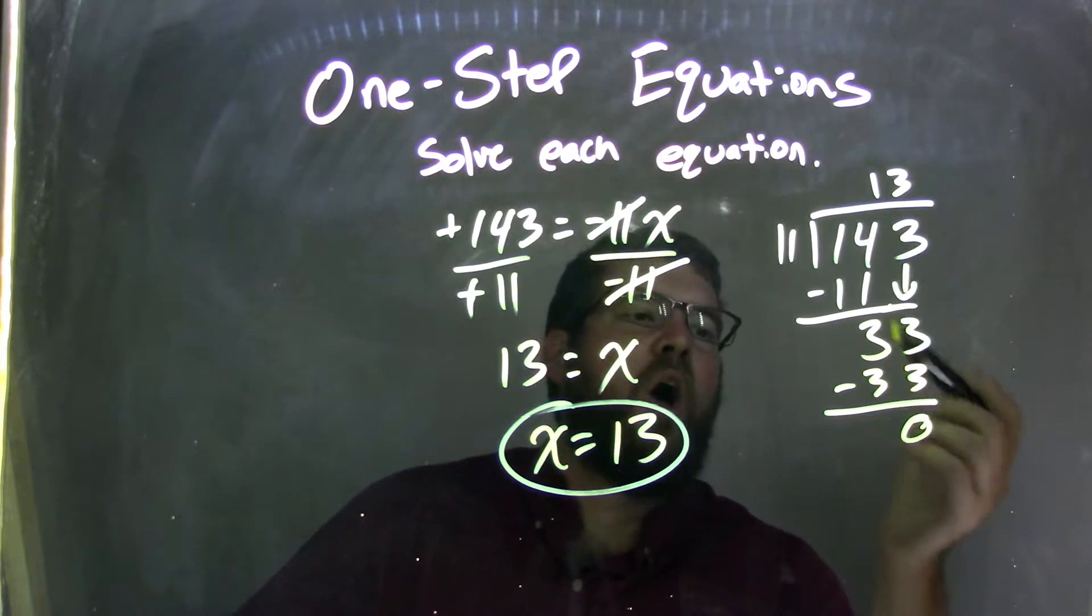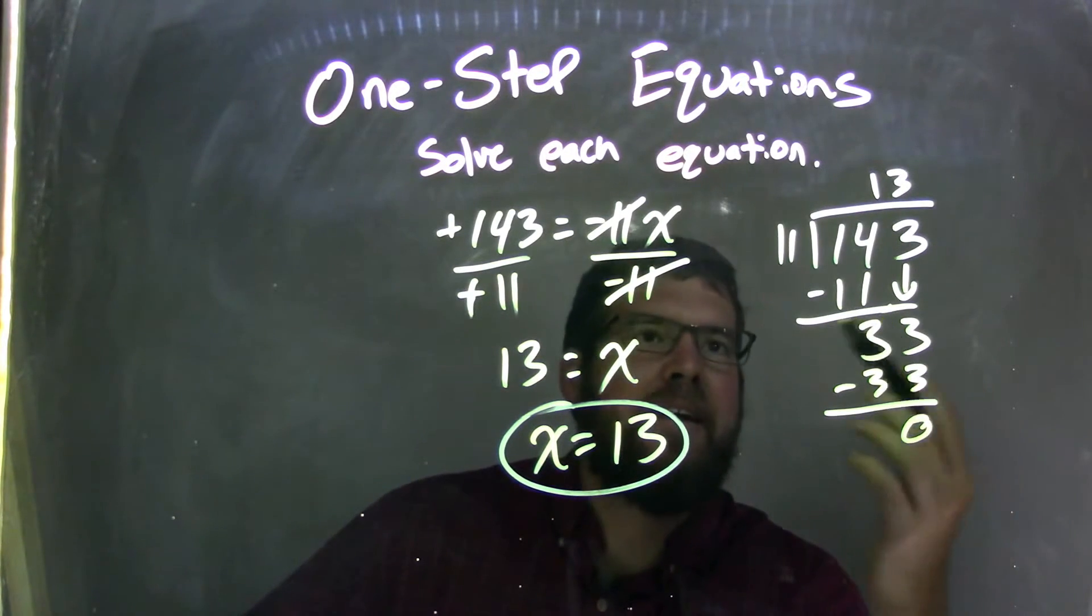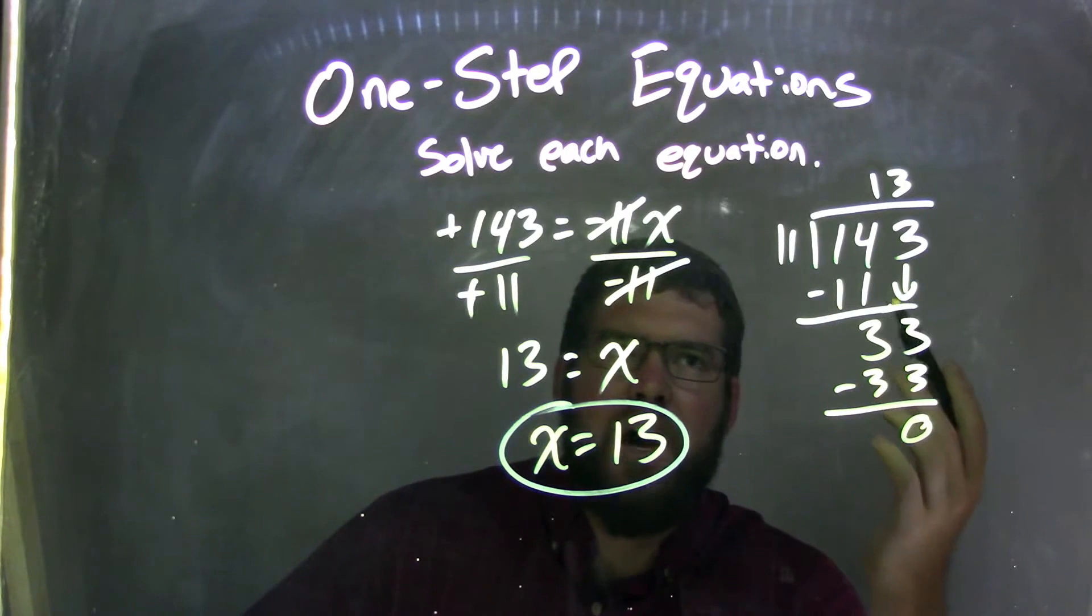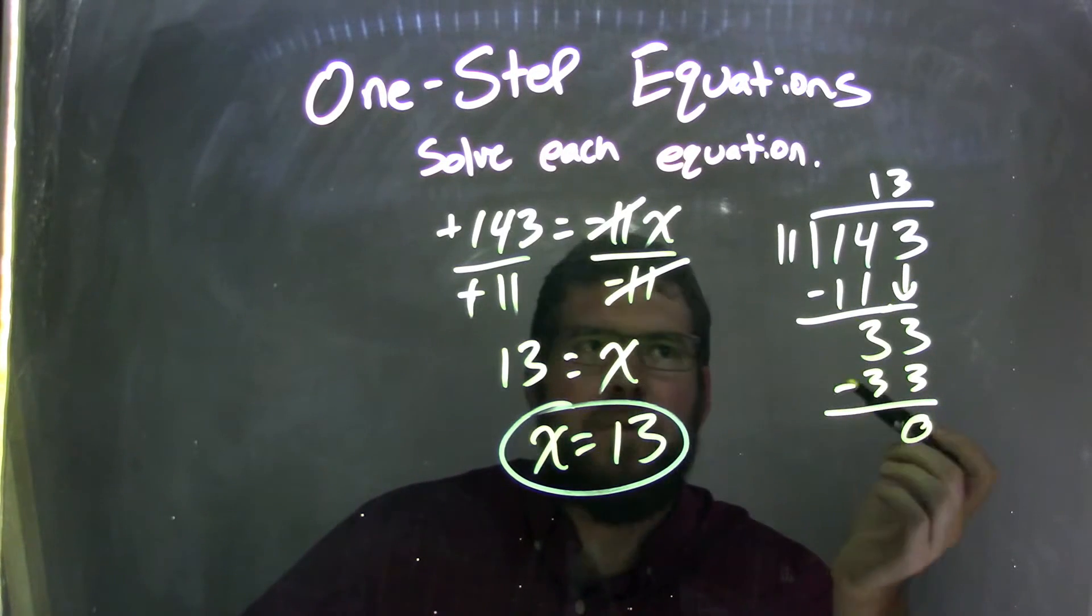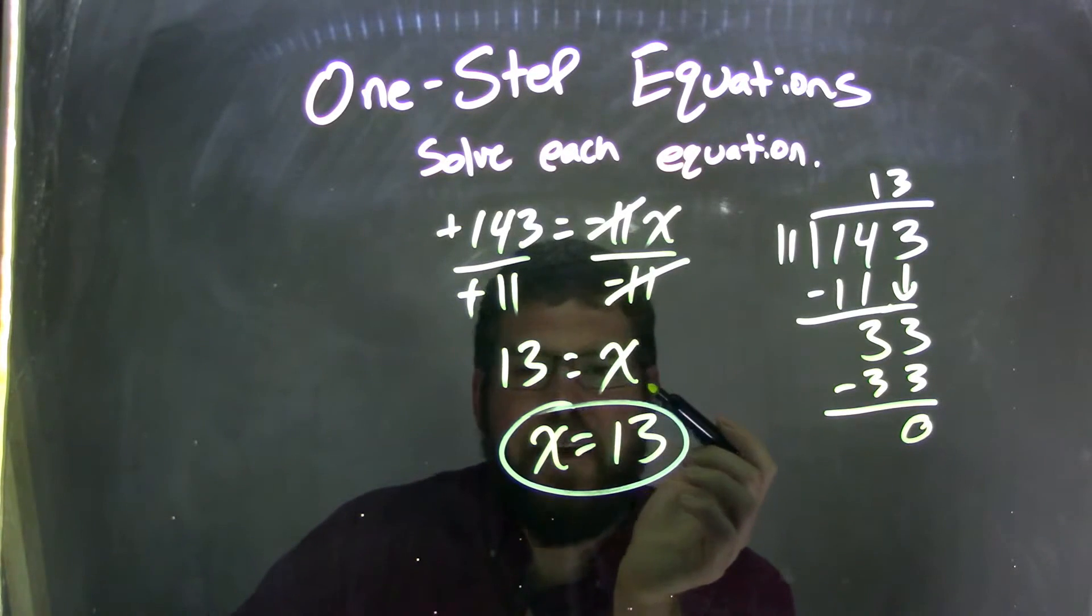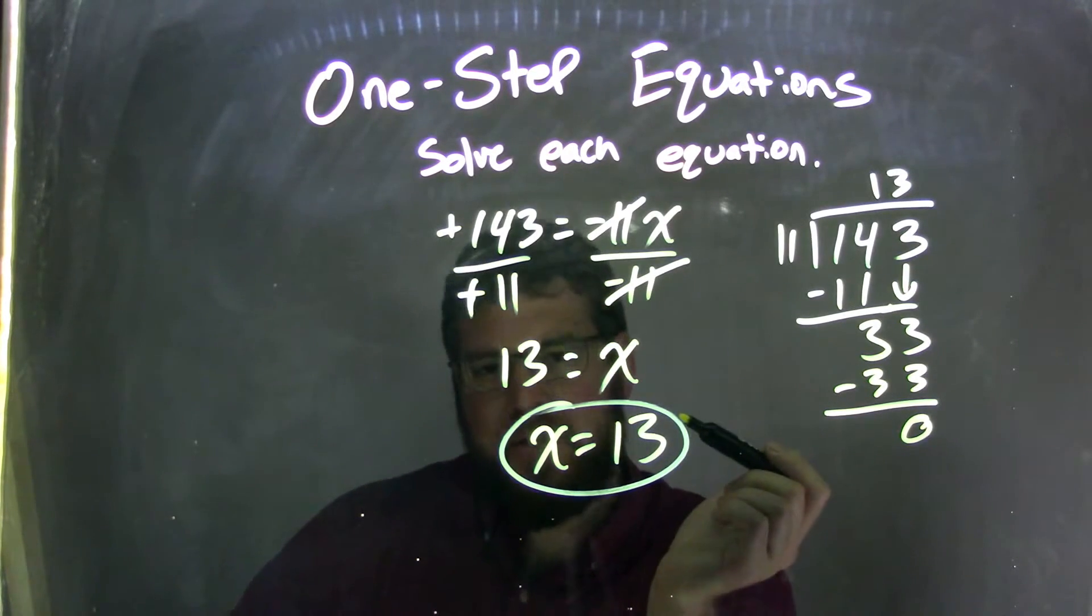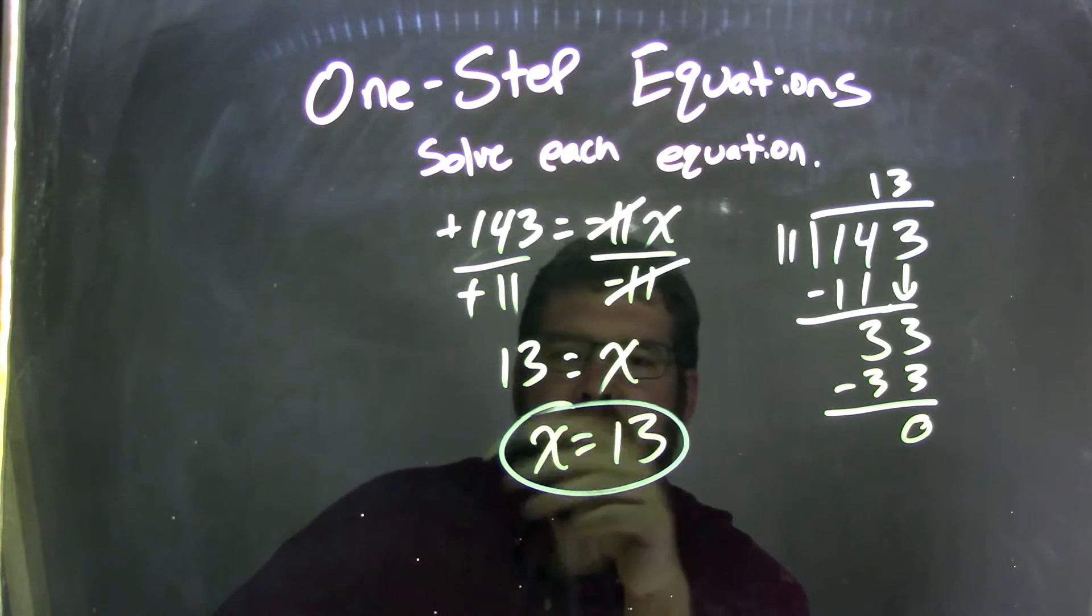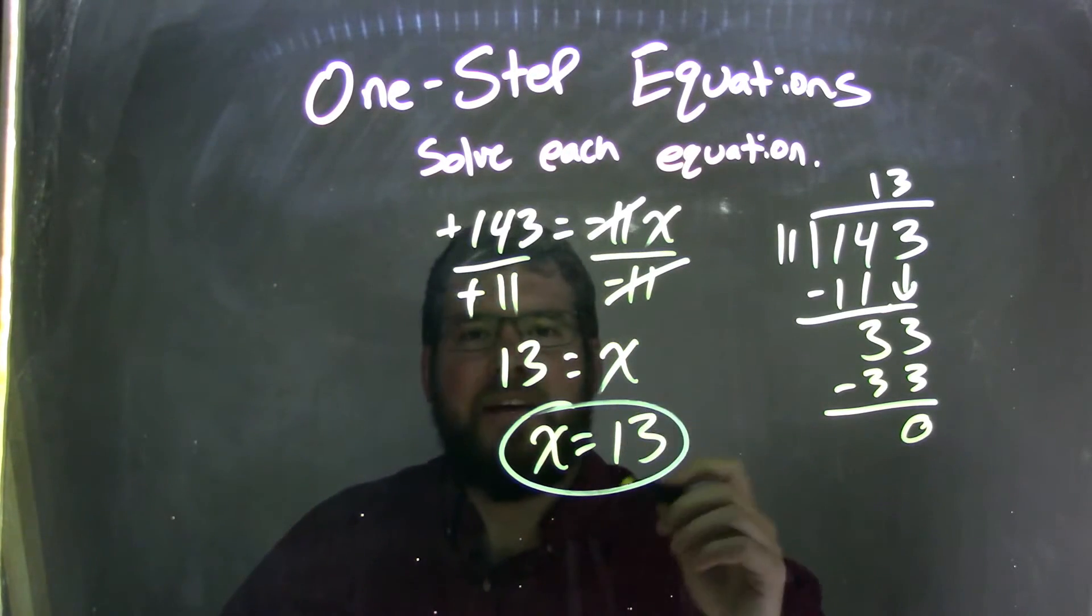11 goes into 143, and when I was all said and done, it went in 13 times. So 143 divided by 11 came out to be 13. So I wrote it here. 13 equals what was left as my x. I rearranged it to put x first because that's a little nicer. And so my final answer here is x equals 13.